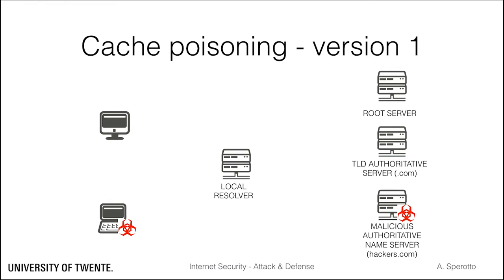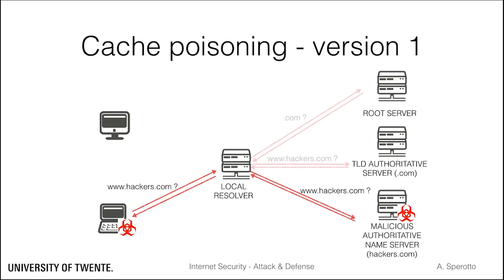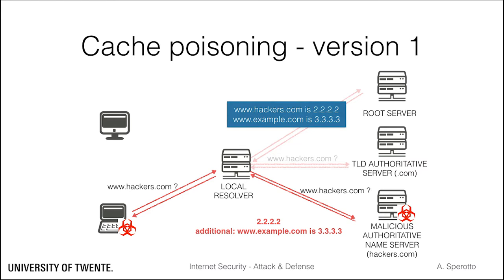Assume that a malicious host issues a query for a forged domain. The local resolver will ask the authoritative name server of that domain for its A record. The malicious authoritative name server answers with the IP addresses and an additional section containing a fake A record for another domain. The local resolver will then cache both pieces of information, and from that moment on, the cache of the local resolver stores unverified information, meaning that all queries to that domain will be redirected to a possibly malicious IP address.